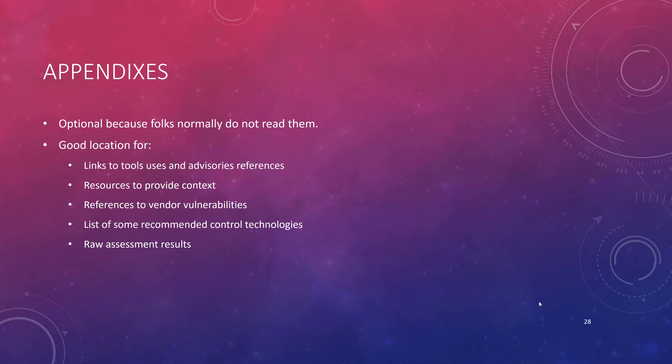That brings us to the end of this fourth of six videos looking at Chapter 9 from Wheeler's most excellent Security Risk Management book. In this video we finished up Phase 3 and looked at writing a risk assessment report — the executive summary, main body, and appendixes. We're now going to move into the next video looking at audit responses. Keep on studying, keep on learning, and I look forward to seeing you in the next video.